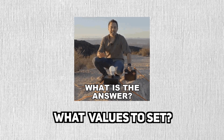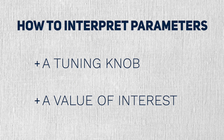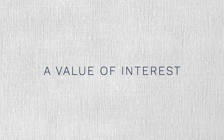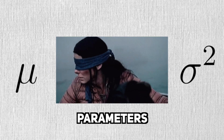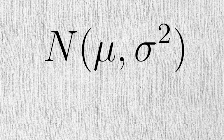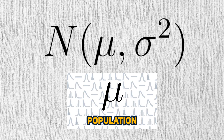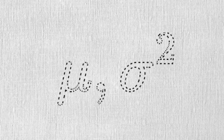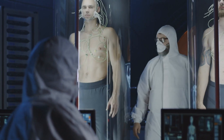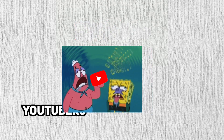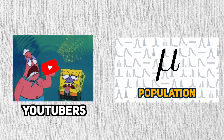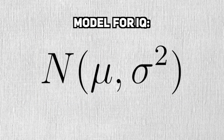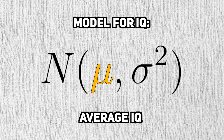But how do we know what values to set? This brings us to the second lens for parameters. Here's the rub: in practice, we'll never know the true values of these parameters. These parameters represent values about a population that we want to study. If you recall from the population video, we'll never fully observe this population and, by extension, never know the true value of the parameter. Remember that we're trying to understand the average YouTuber IQ. YouTubers are our population. Our model for IQ is a Gaussian random variable, so the average IQ is captured by the mean parameter.